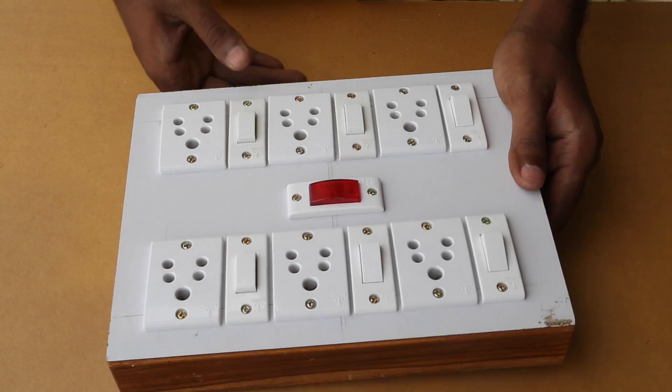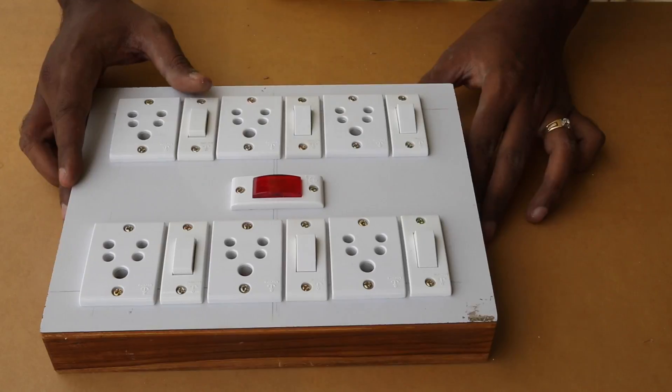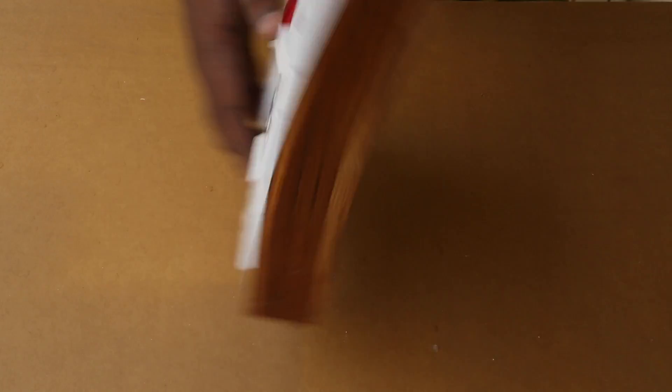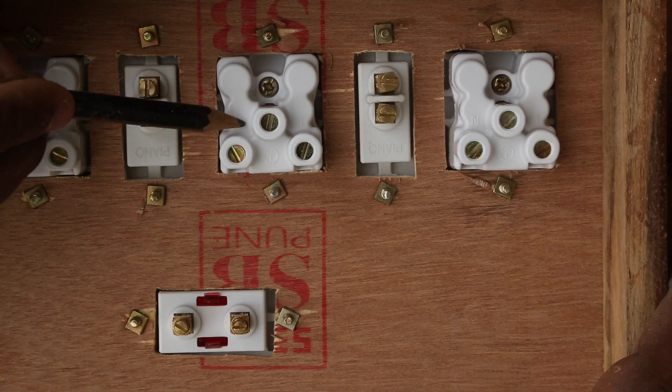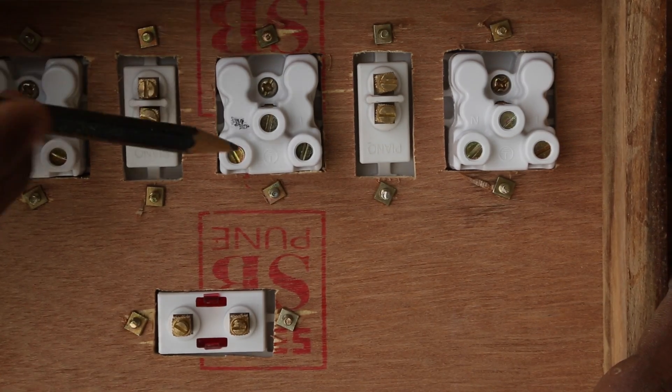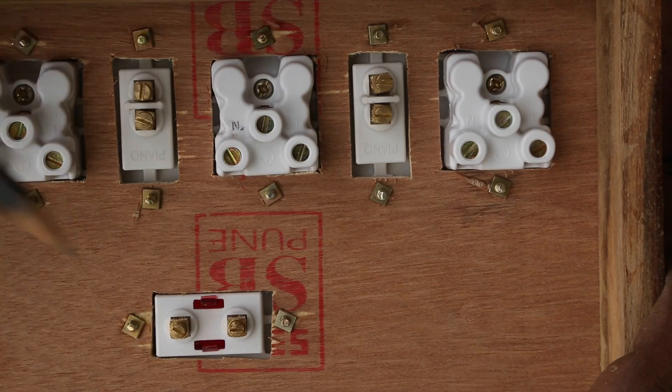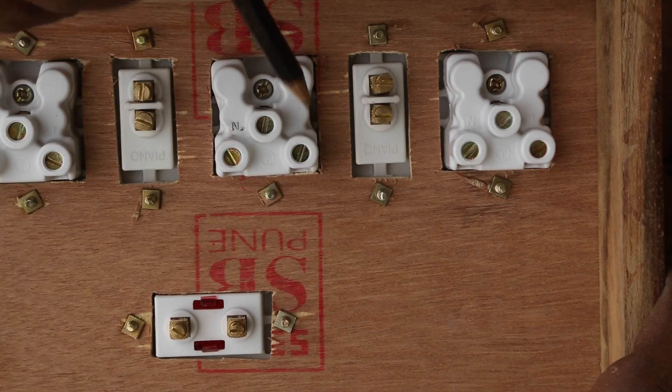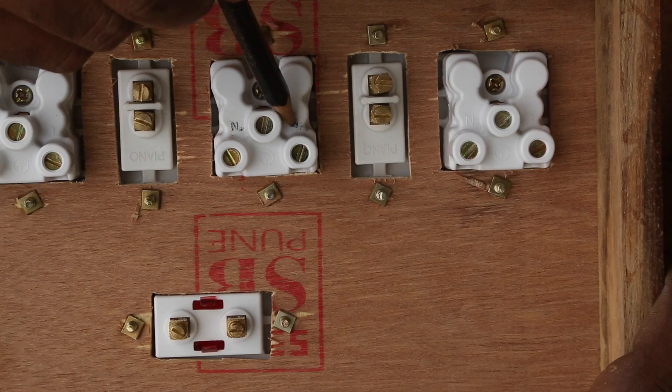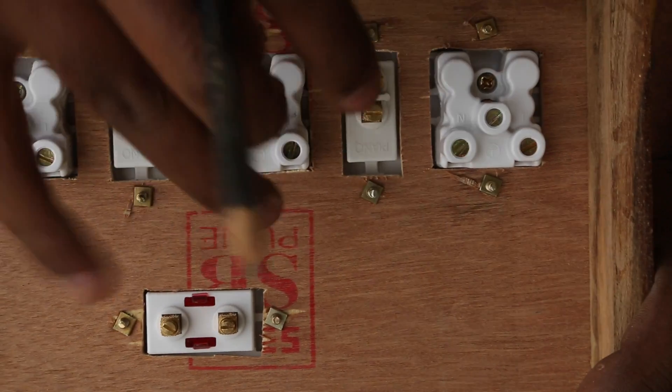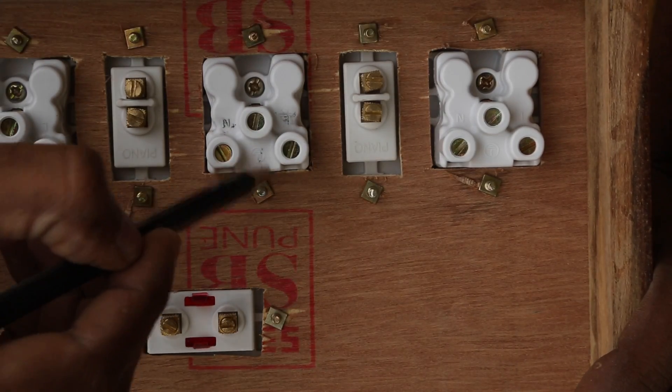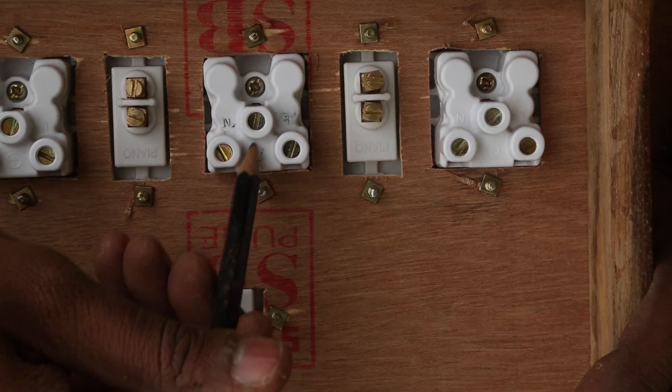So here's every socket and switch fit and this is how it looks. Now let me explain you a little bit of how the connection goes. I'm just going to take a pencil and shade light over it because I'm sure that you will not be able to see white over white. So that's neutral, that's live and here is the ground.